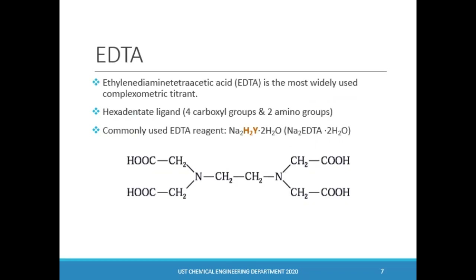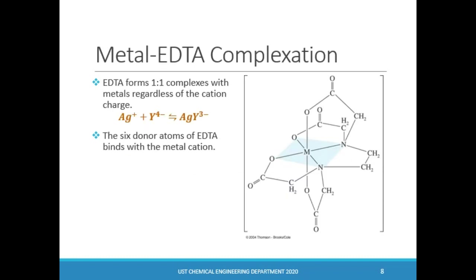The use of multi-dentate amino-carboxylic acids was first introduced in 1945. The most widely used complexometric titrant is ethylenediamine tetraacetic acid, or simply EDTA. It is a hexadentate ligand which can donate six pairs of electrons to a metal ion from the four carboxyl and two amino groups. When EDTA is used as a complexing agent, its fully deprotonated form, Y4-, binds with the metal in a cage-like structure. The reaction of EDTA with a metal ion always forms a one-to-one complex product regardless of the metal ion charge.